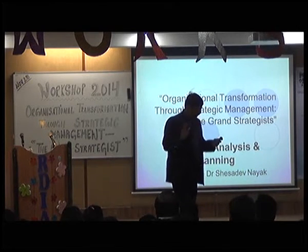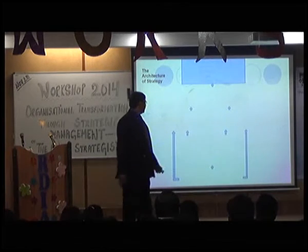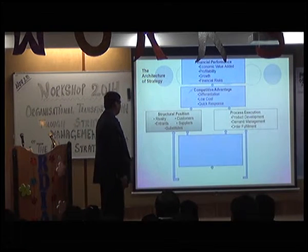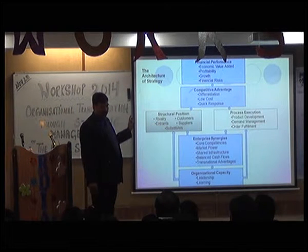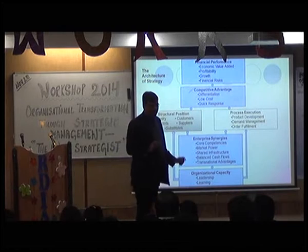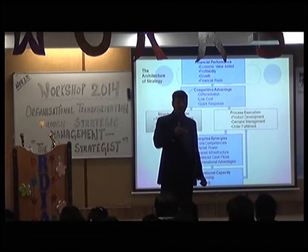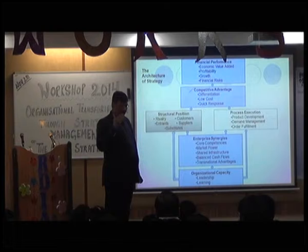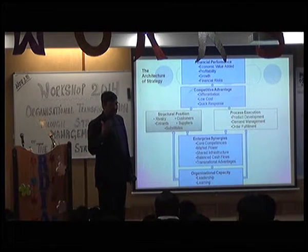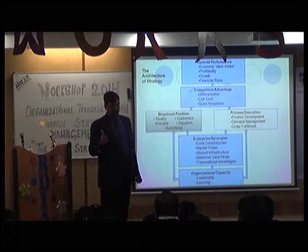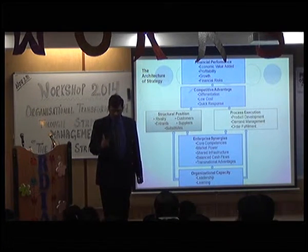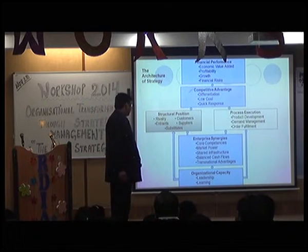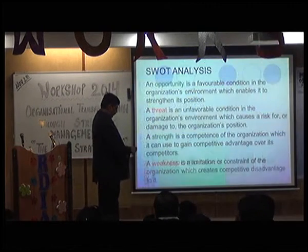Yesterday I showed you the architecture of strategy, where we figured out how the financial performance of a firm is of paramount importance, because fiscal responsibility is a prerequisite for social responsibility. We can aim for above-average profitability levels if we have some kind of competitive advantage — either in the form of differentiation, low cost, quick response, or a combination of all those. In today's session we are going to find out the structural positions.